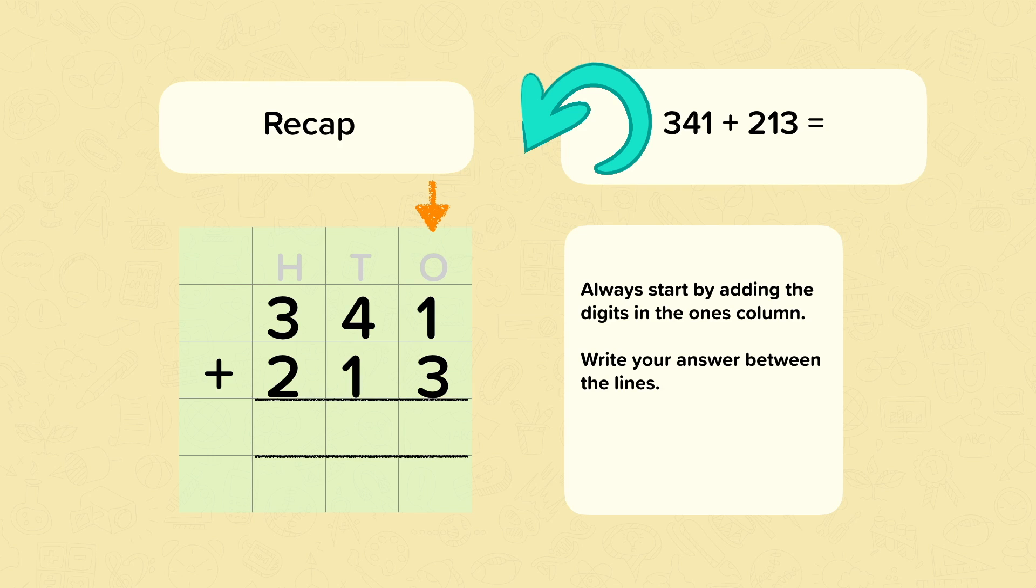Starting with the ones, one add three is four. Then we continue to add the tens. Four tens add one ten equals five tens. And onto the hundreds, three hundreds add two hundreds is five hundreds. So the answer is 554.